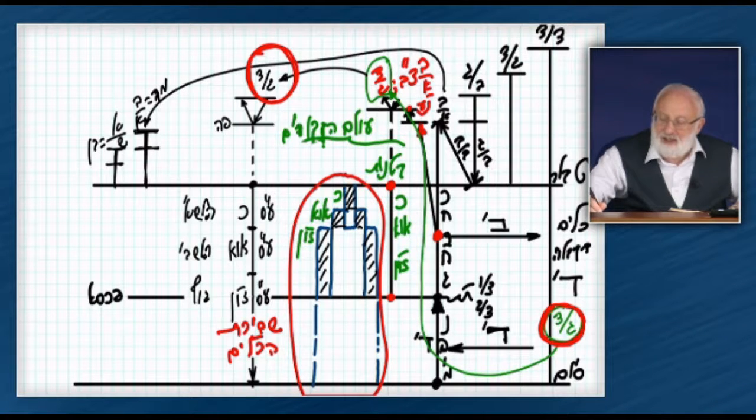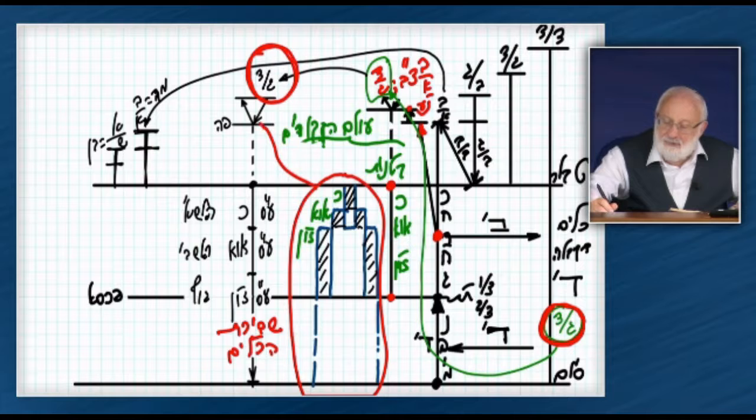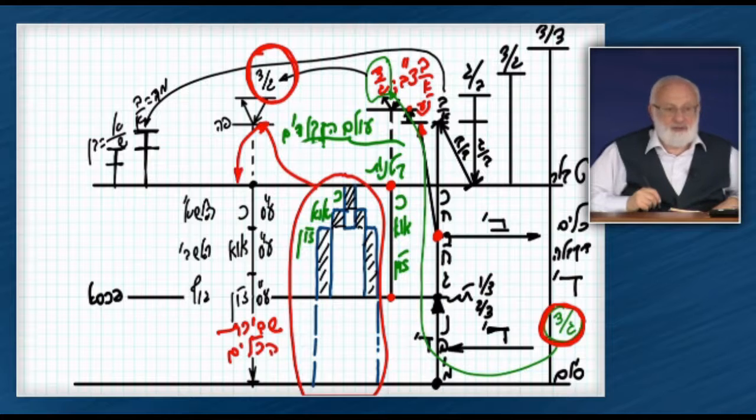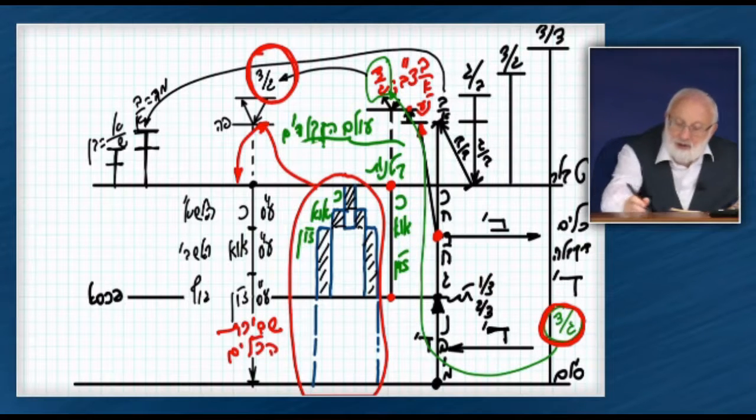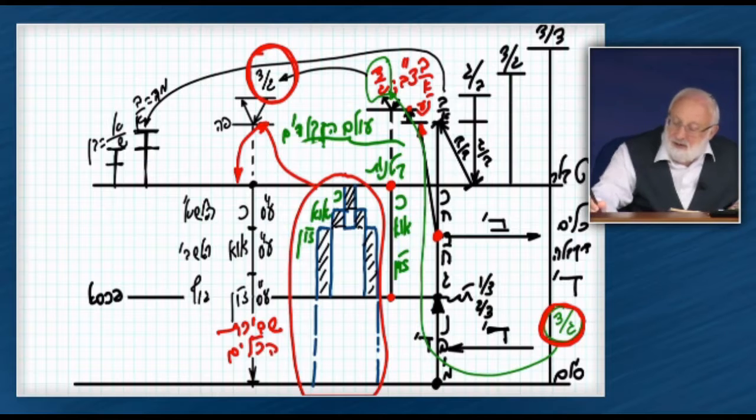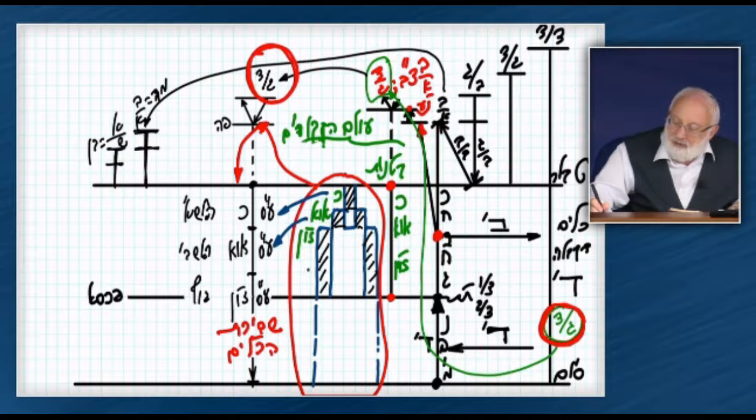that Partzuf now, through the Zivug Deakha, will go down here and expand in Gadlut. In Gadlut, its Katnut will come in Gadlut to Katnut, Abavehima in Gadlut will come to Abavehima, and Zon in Gadlut will come to Zon.